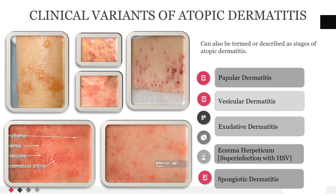In the chronic phase of atopic dermatitis, lesions become spongiotic from increased hypersensitivity. The clinical variants of atopic dermatitis — and as a disclaimer, this is not an all-conclusive list — atopic dermatitis is a very variegated skin lesion that can present in multiple ways. Clinical variants can also be described as stages of atopic dermatitis.